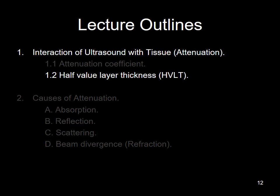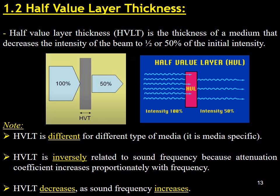We come to the second branch of the first title of today's lecture, which explains the concept of half-value layer thickness. The half-value layer, or half-value thickness of a material, is the thickness at which the intensity of an ultrasound beam entering it is reduced by half. Half-value layer thickness differs depending on the type of media — it is media-specific. Because the attenuation coefficient increases proportionally with frequency, half-value layer thickness is inversely related to sound frequency. As the frequency of the sound increases, the half-value layer thickness decreases.